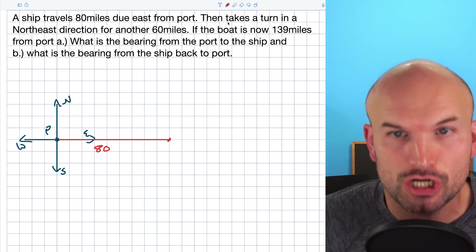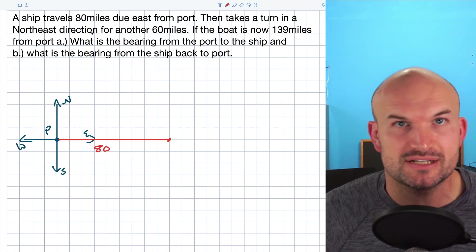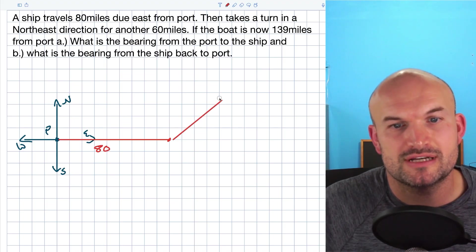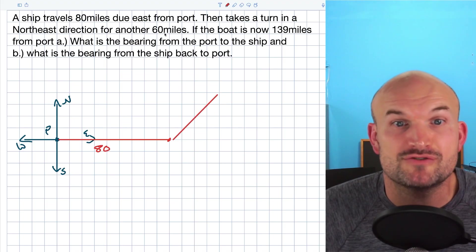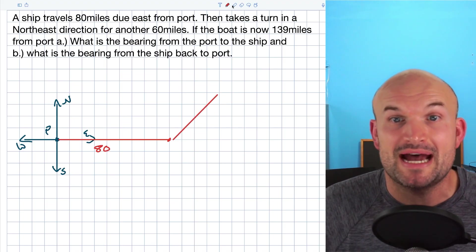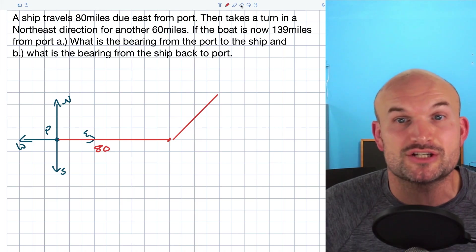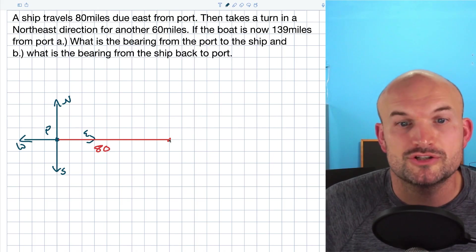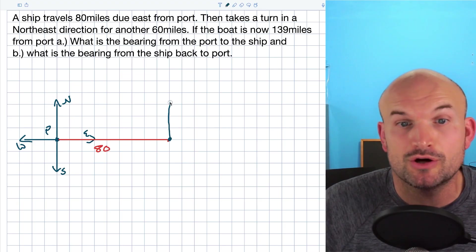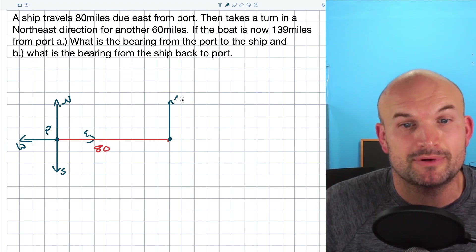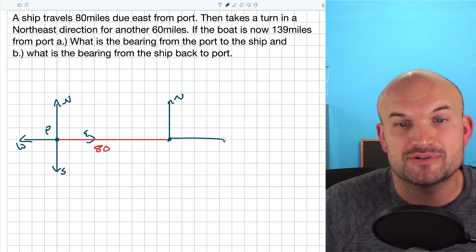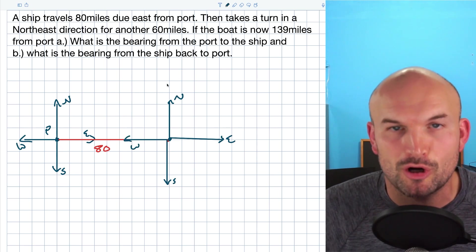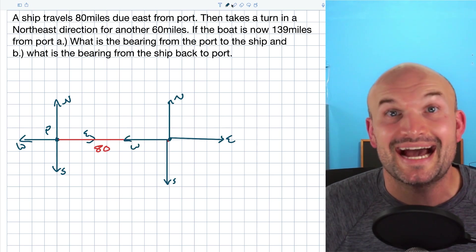Then it says the ship takes a turn in the northeast direction. Northeast is very vague — we don't really know exactly where it's going, just that it's in that direction somewhere over here. It says you're going to go in that direction for another 60 miles. Whenever I have this, I need to create another cardinal direction. So from this turning point, I'm going to draw north, east, south, and west again. Everything doesn't need to look perfect.